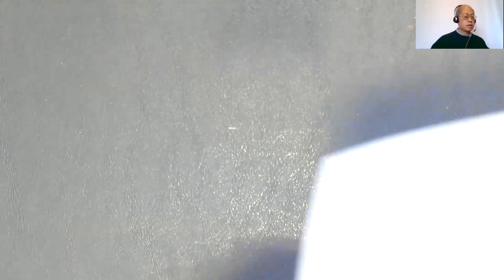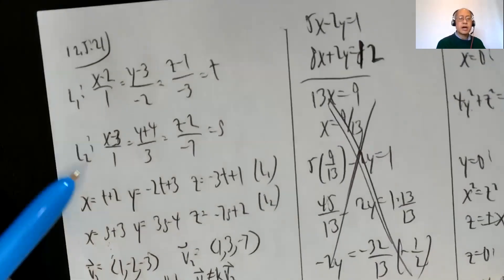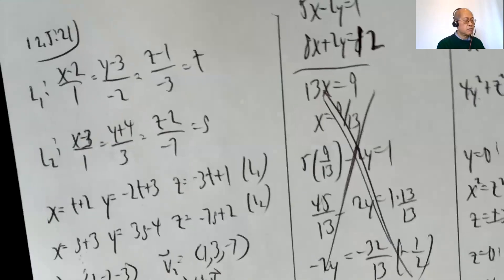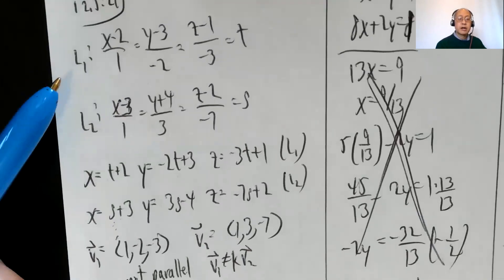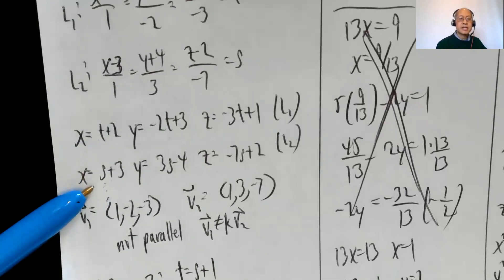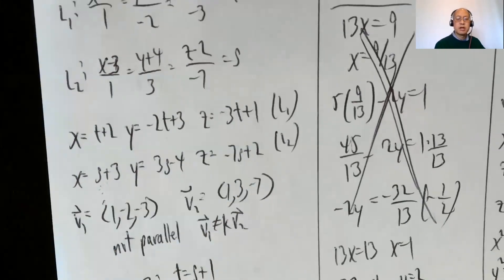For this video, I'm not only doing 12.6 — I'm going to go back and clean up some other stuff from 12.5 and previous sections in preparation for the test or exam. Going back to 12.5: you're given two lines in symmetric equations, with parameter T for L1 and S for L2. They ask whether the lines intersect, are parallel, or are skew. Solving for X: X = T + 2, Y = −2T + 3, Z = −3T + 1, and for L2: X = S + 3, Y = 3S − 4, Z = −7S + 2.